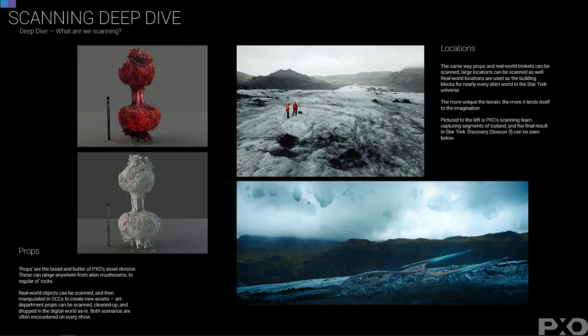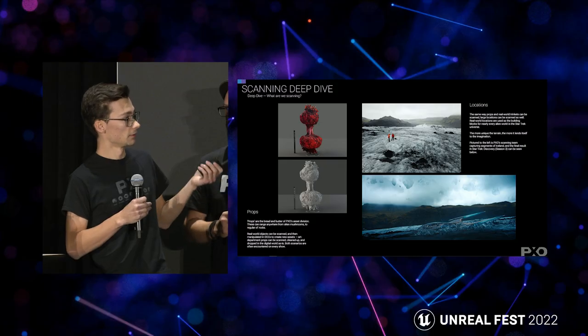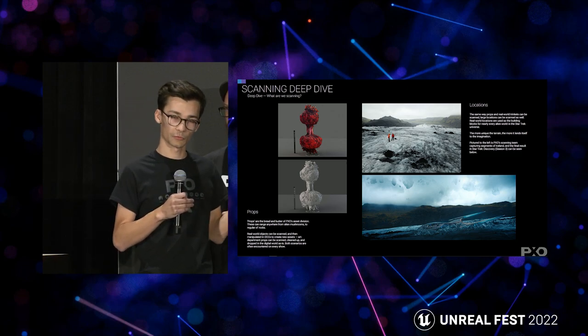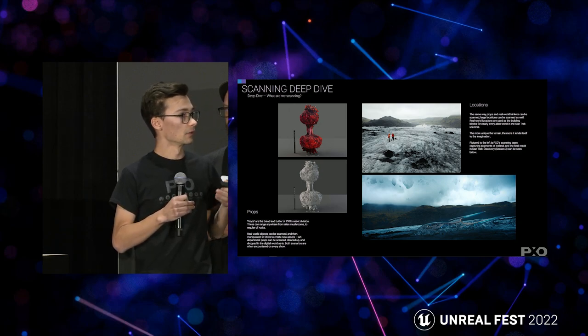For Star Trek we mainly cover props and location scans. Props are built practically by the art department and we're called in to scan them to make a digital twin for the asset or VAD department. One example was a prop with a light inside illuminating from within — we scanned it twice, once with the light off and once with the light on. This allowed the artist to extract a mask to replicate the illumination effect one-to-one, seamlessly matching the practical element so you couldn't tell the difference between practical and digital props on the wall.